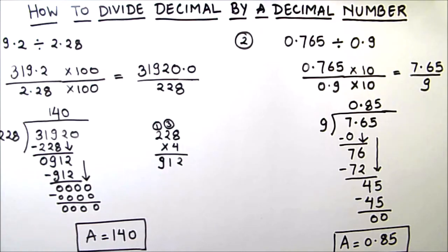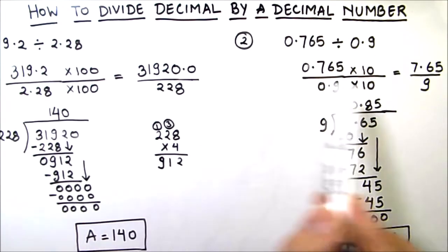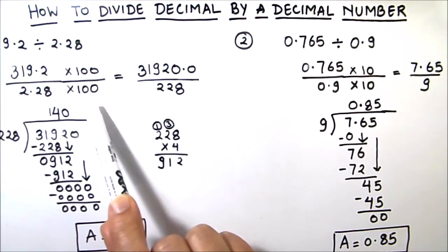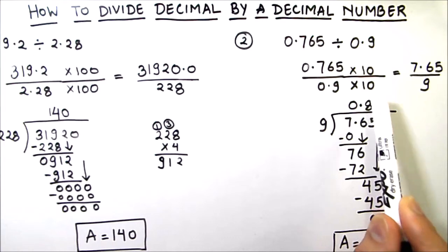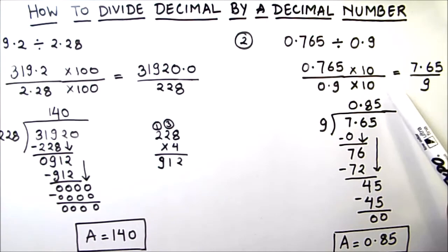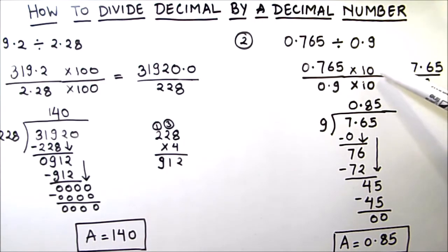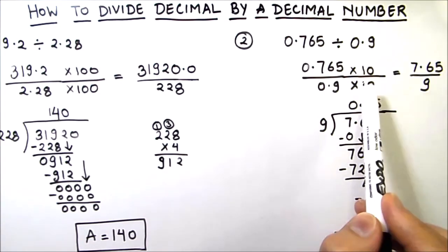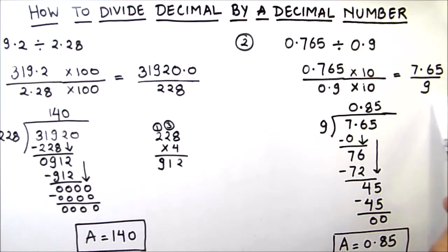Let's do a quick recap. To divide a decimal number by a decimal number: Step 1 is to remove the decimal point from the divisor by multiplying it by the required power of 10 — by 100 if there are two decimal digits, or by 10 if there is one. Step 2 is to multiply the numerator by the same number, so the value of the expression doesn't change. After that, the divisor has no decimal and we can perform normal division.